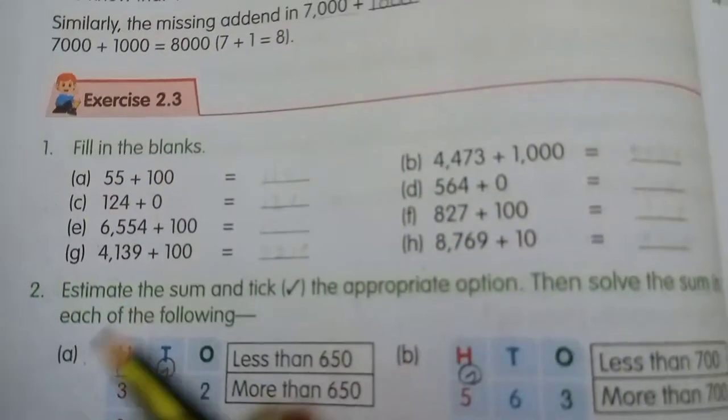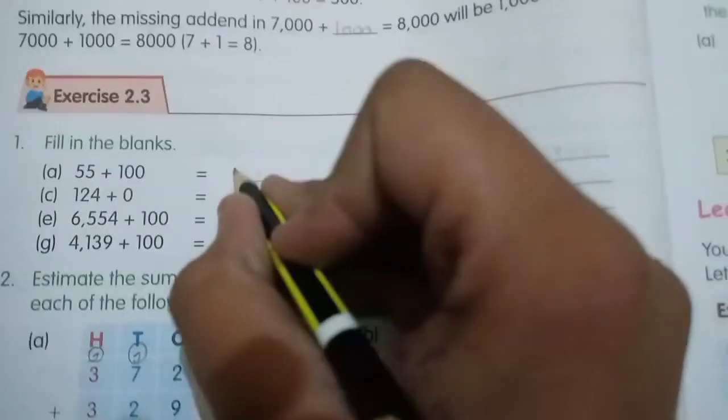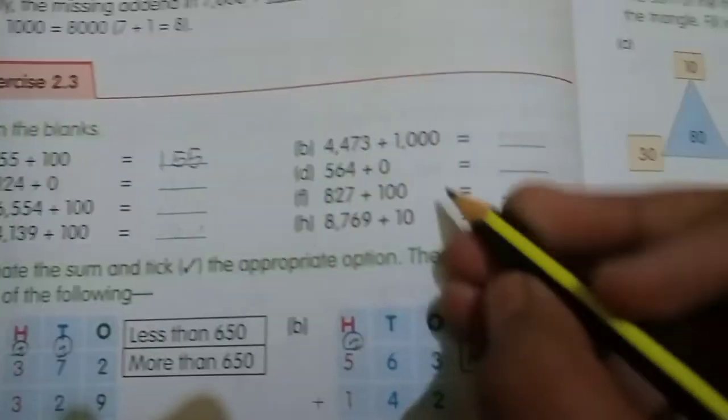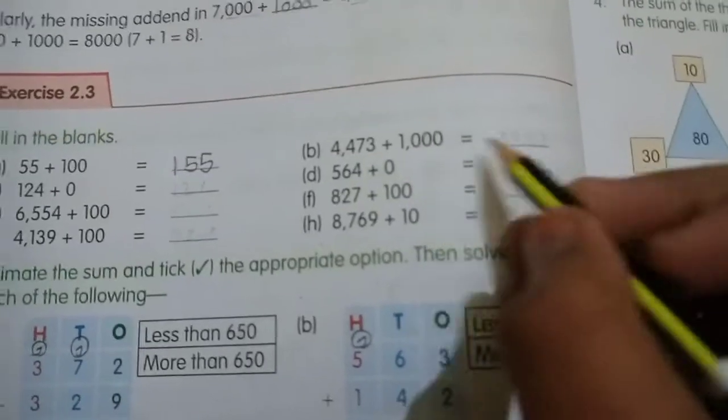Question number one is fill in the blanks. (a) 55 plus 100, so you have 155. (b) 4473 plus 1000.